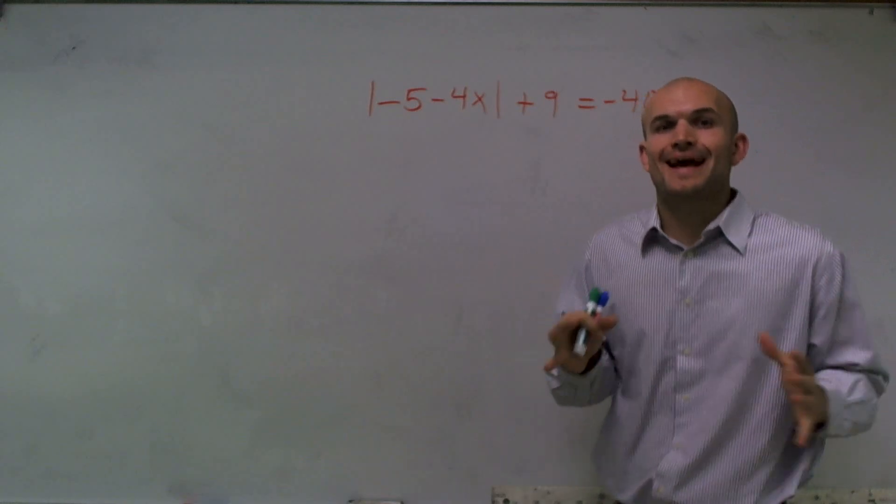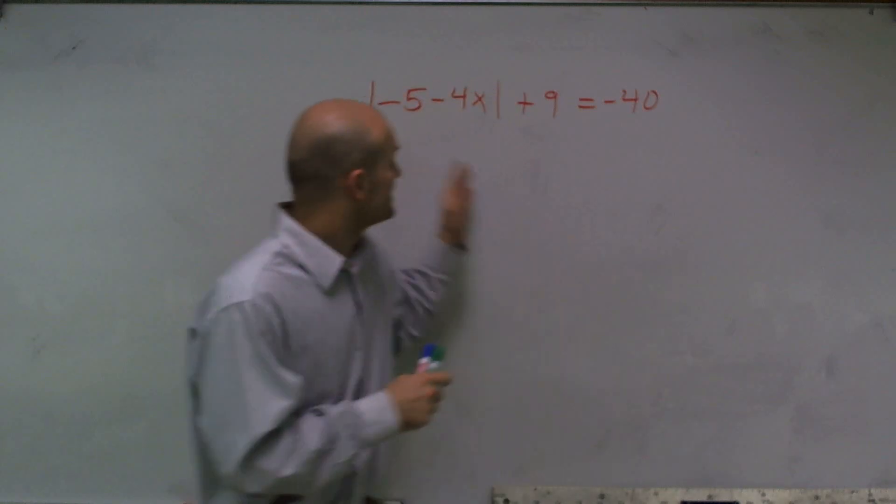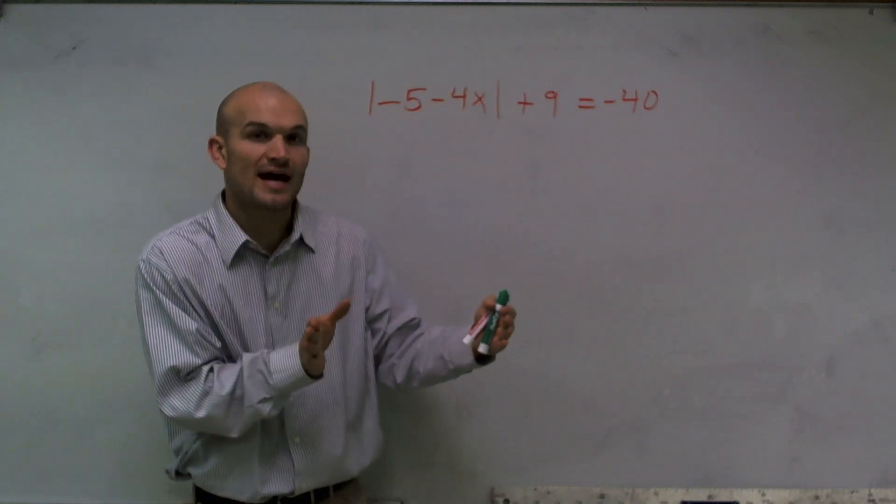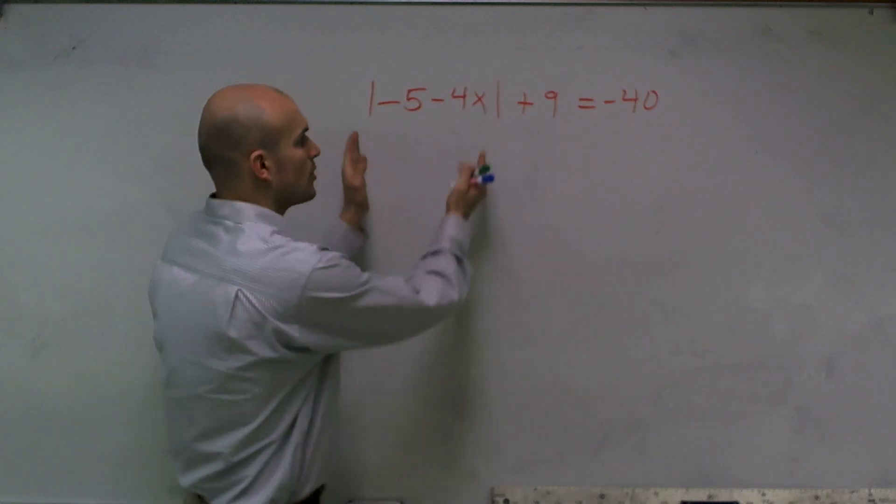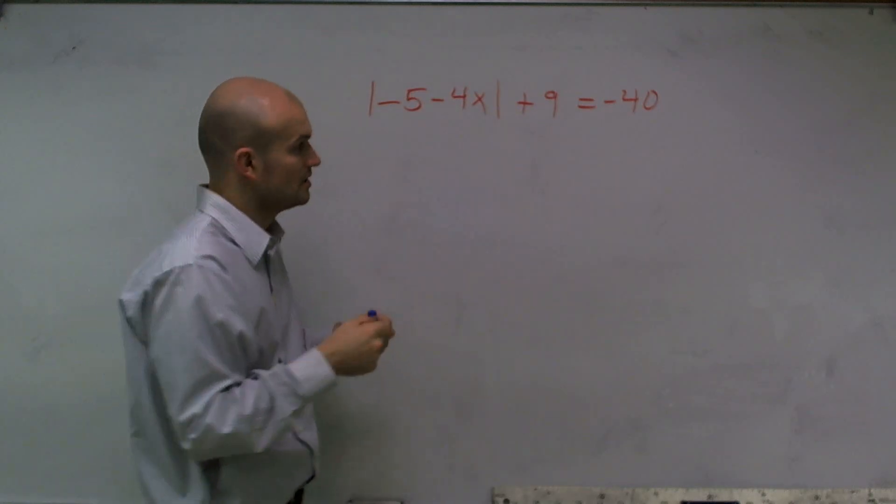Now, whenever we have absolute value equations, it's very important to make sure that we isolate the absolute value sign. OK, because remember, when we're solving for absolute value, we're going to find that positive and that negative value. So it's really important to get rid of anything else that's outside of our absolute value function.